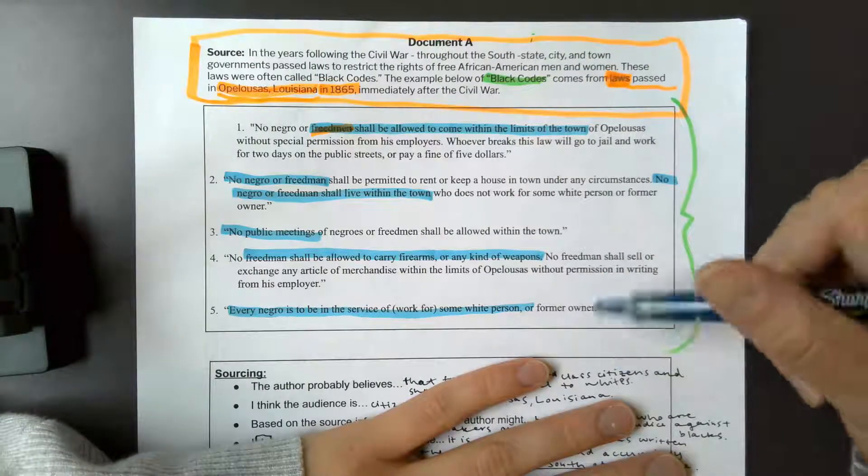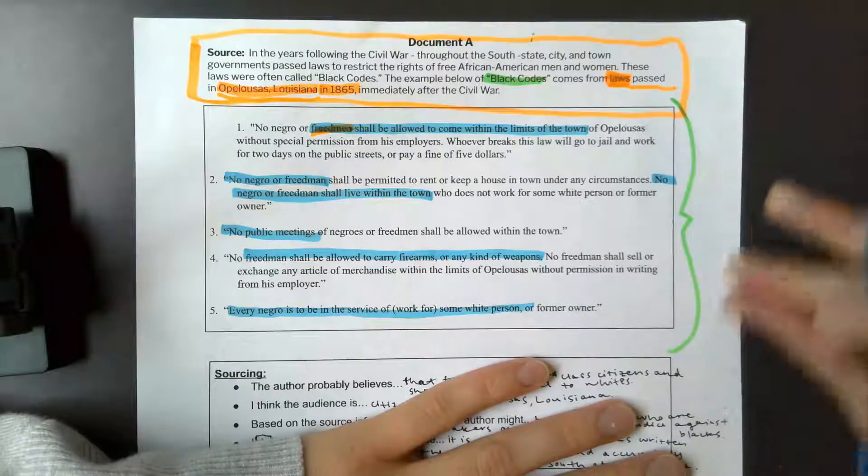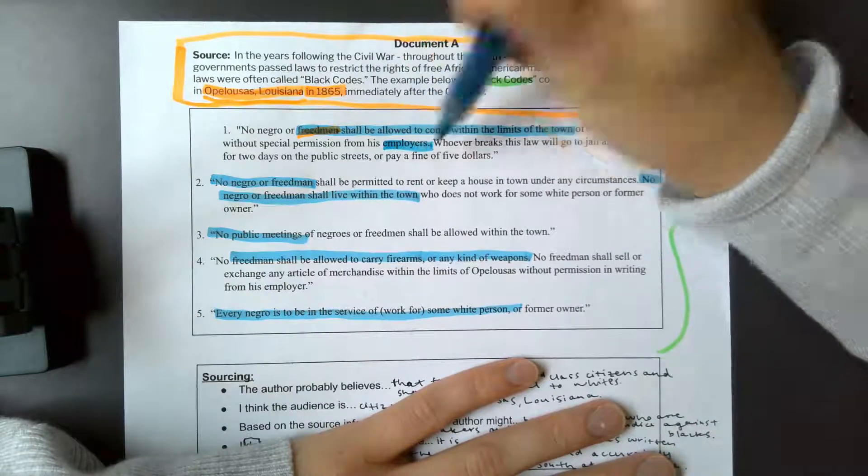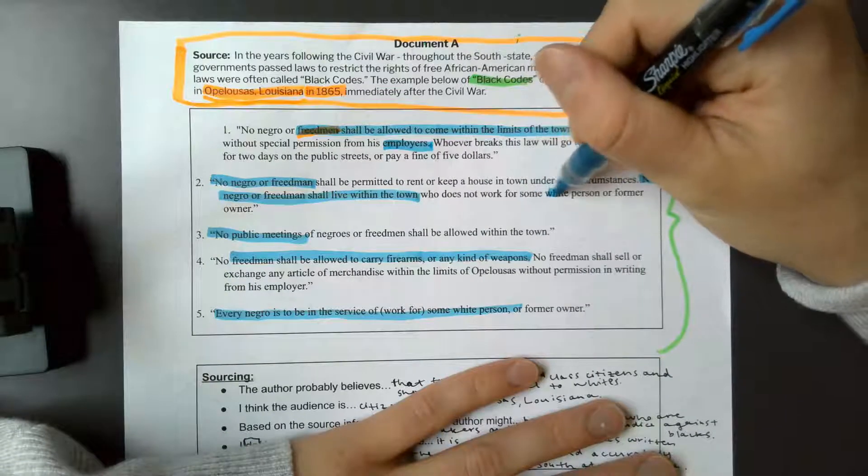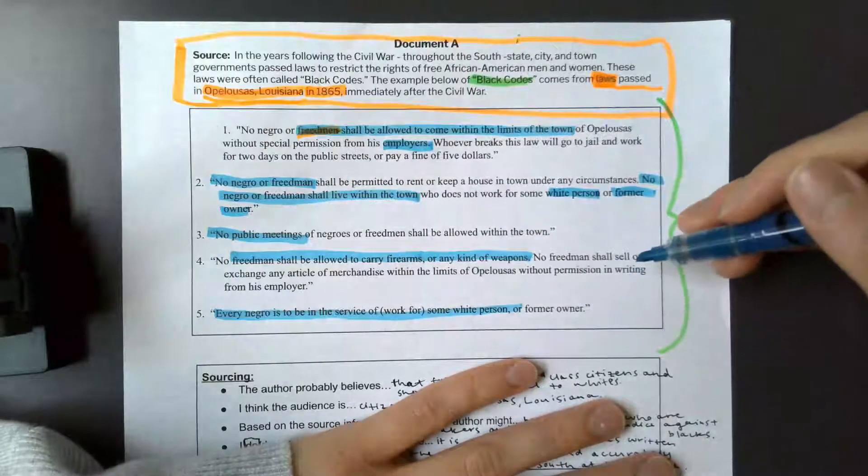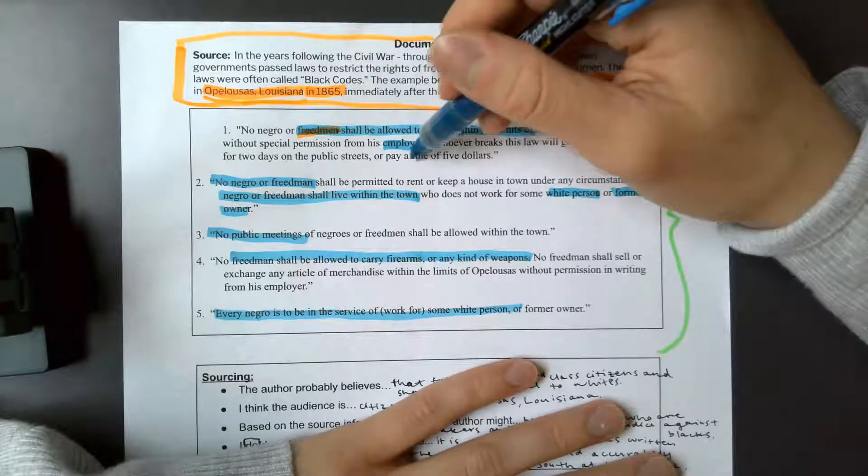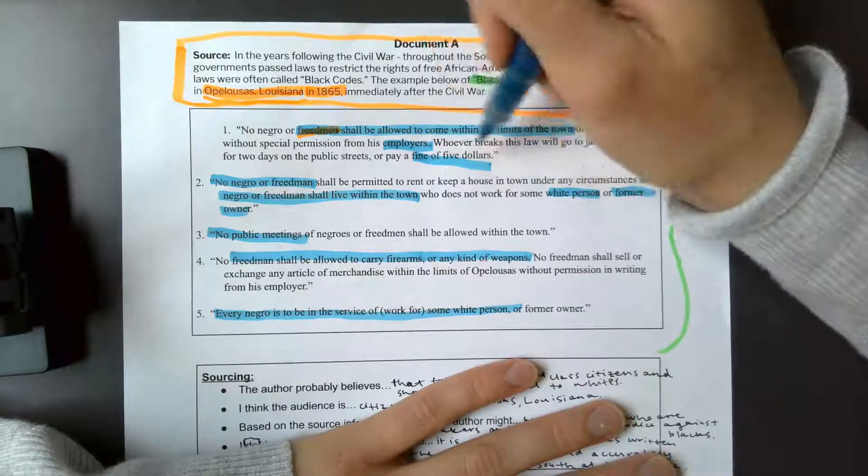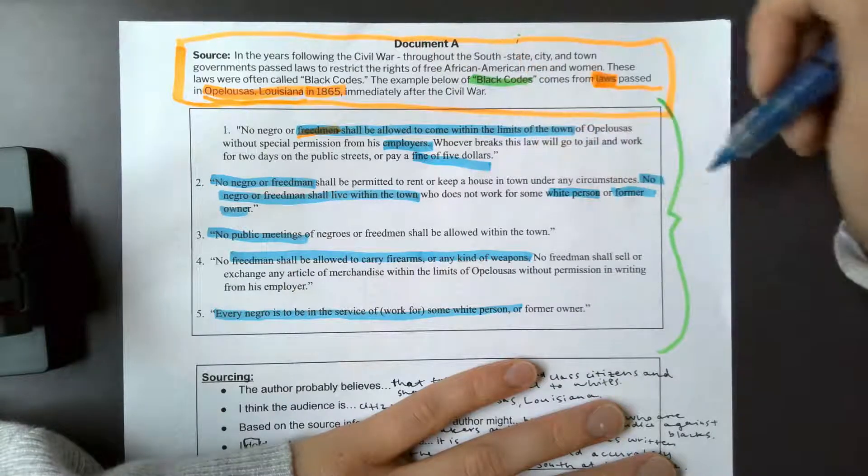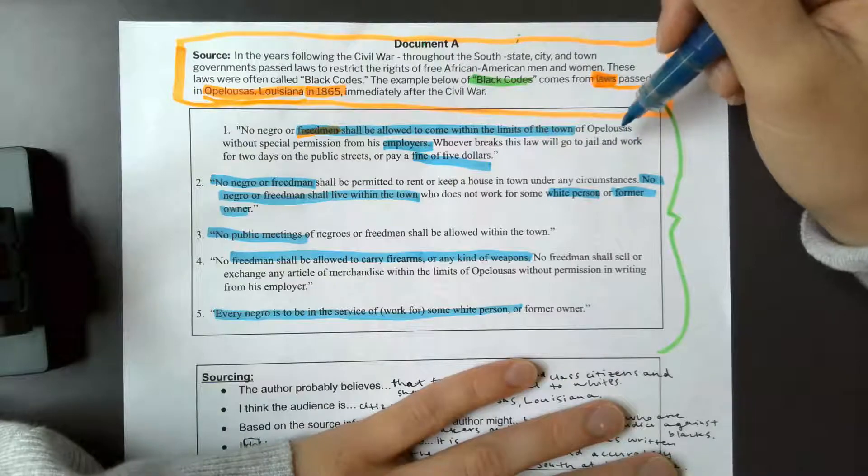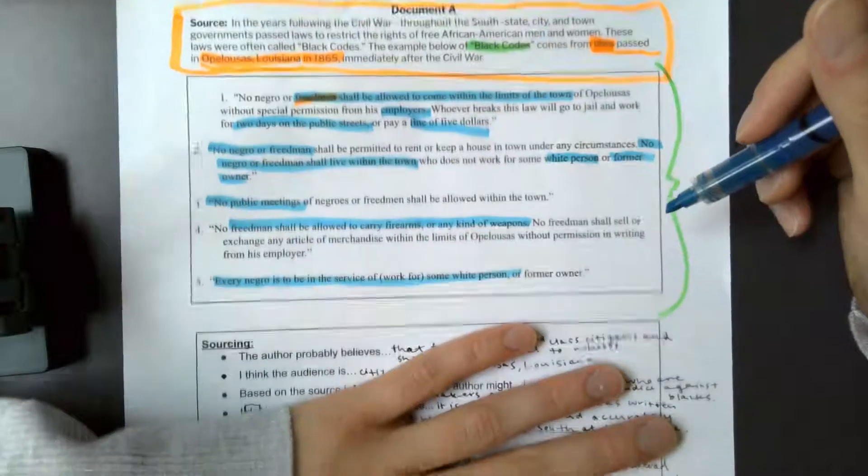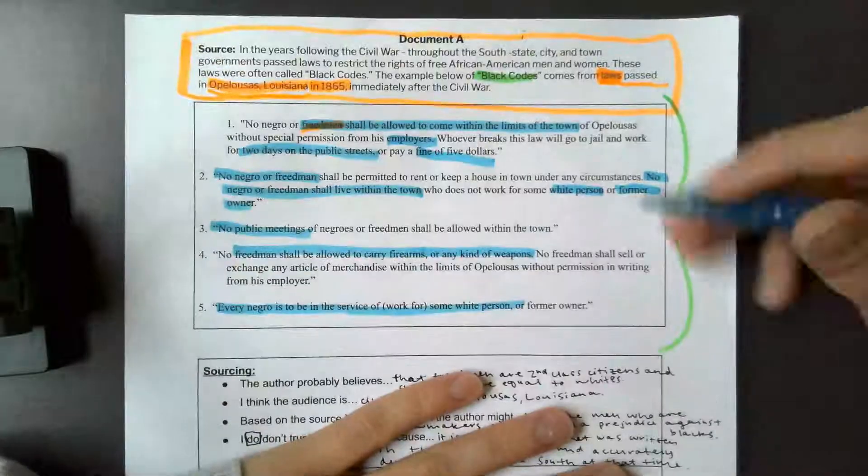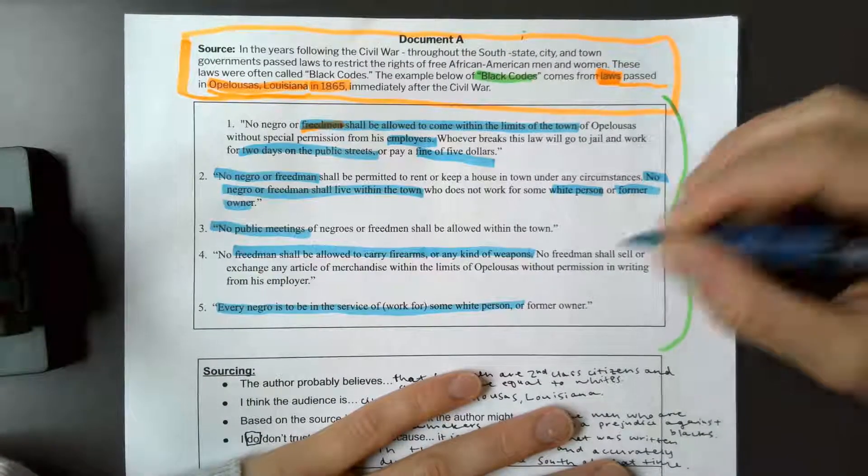They don't refer to them as African Americans or blacks anywhere throughout this document. They always refer to the people as employers or white person or former owner. And then a fine, five dollars, pretty reasonable. You know, it's not super expensive, but back then with what freedmen were making, it's kind of expensive. But two days on the public street, it's not unreasonable. These are pretty reasonable as far as black codes go, so I think they did that on purpose just to not be super inflammatory.